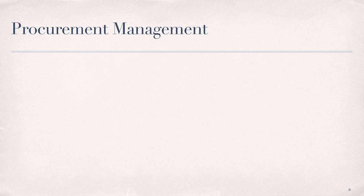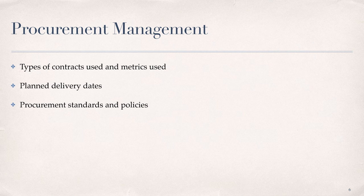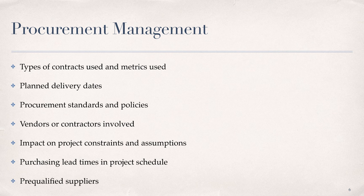The process of obtaining goods and services from providers outside of the organization is called procurement. The procurement management plan details how the procurement processes will be managed, and it includes types of contracts used, metrics to measure contractors' performance, planned delivery dates, the organization's procurement standards and policies, the number of vendors or contractors involved, how purchasing may impact constraints and assumptions of the project plan, coordination of purchasing lead times with the project schedule, and the identification of pre-qualified suppliers. Be sure to complete both reading assignments for this module for additional information on cost and procurement management.